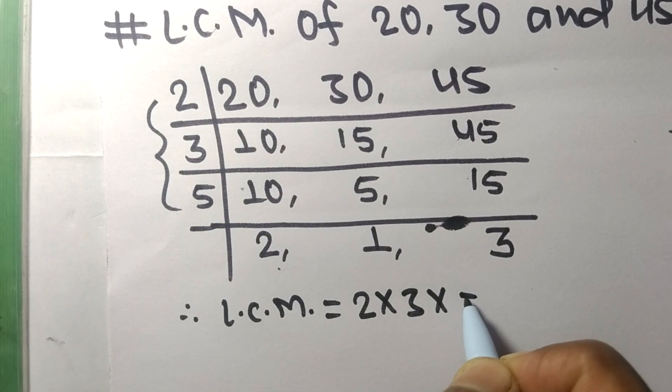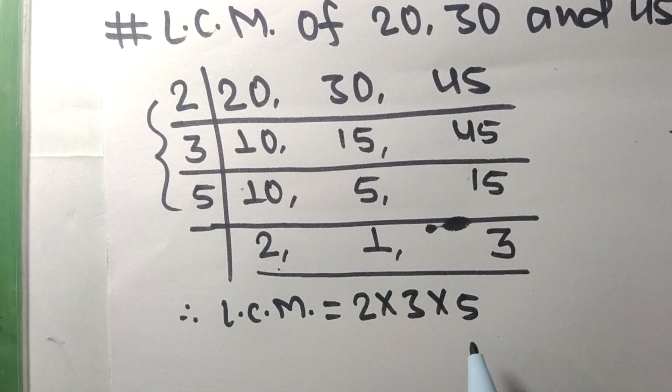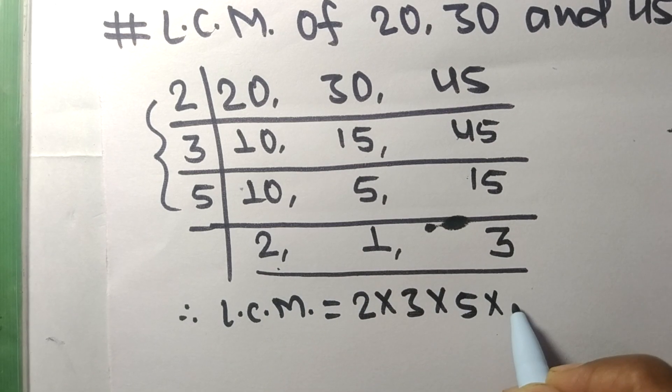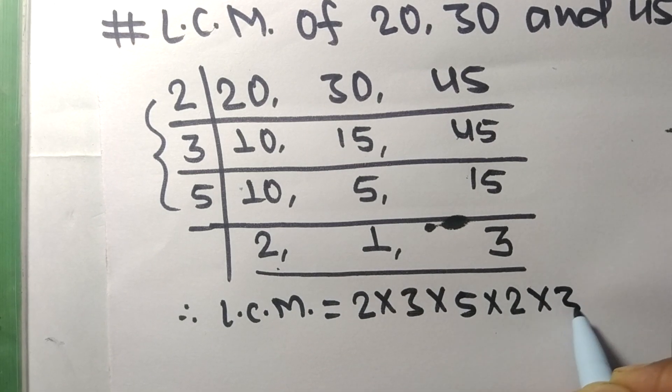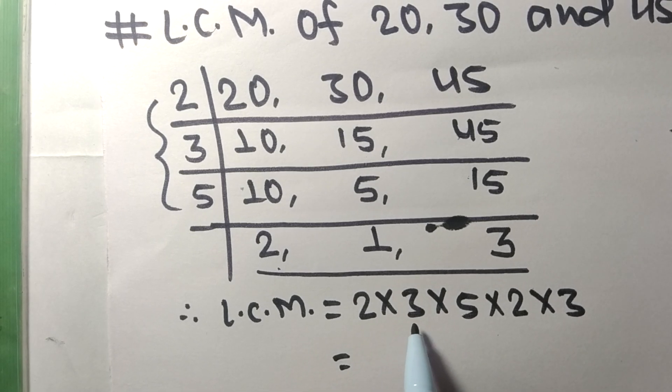2 times 3 times 5, and from this side we choose the numbers greater than 1, that is 2 and 3, so multiply by 2 and 3. So 2 times 3 equals 6, 6 times 5 equals 30, 30 times...